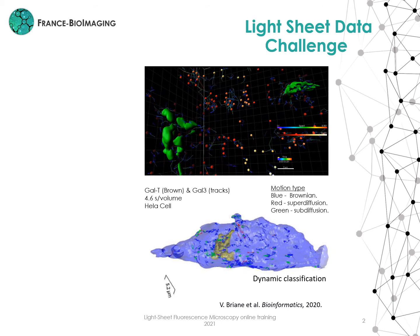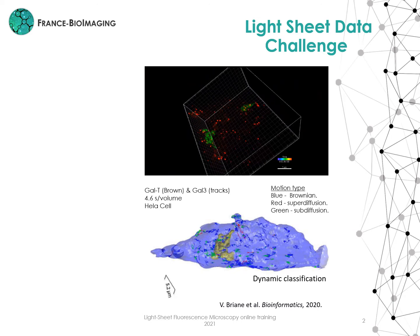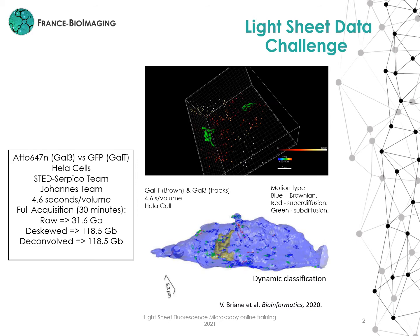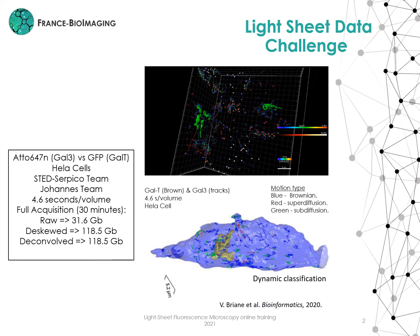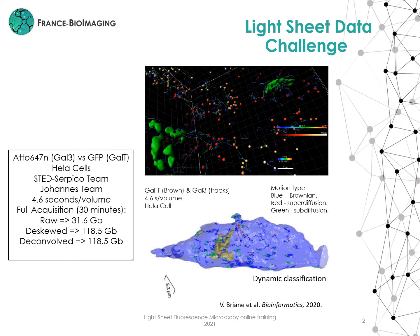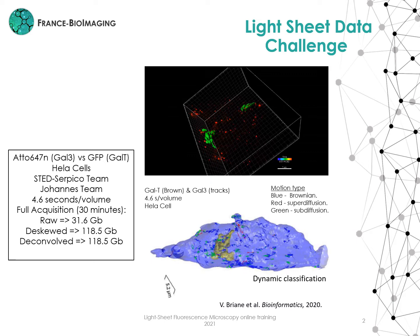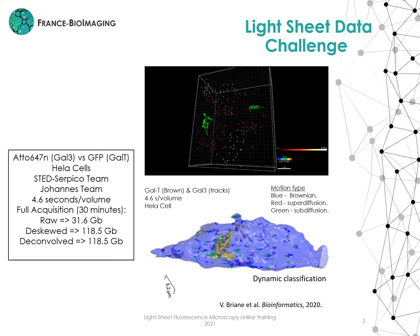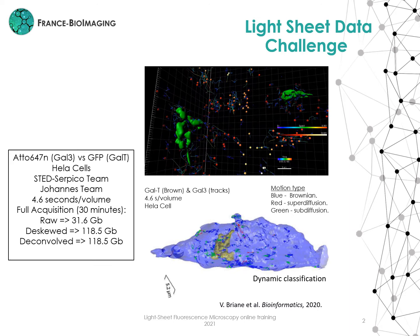Nevertheless, it is important to mention that the acquisition was 30 minutes long. It implies around 70 gigabytes of raw data for a given cell. Each volume was acquired every 5 seconds. The raw data was corrected and deskewed for visualization purposes. These steps include passing from 16 bits to 32 bits and increasing the number of pixels due to the deskew step, which will generate some extra gigabytes. This can be even more complex with other microscopes, as in the case of the SPIM where the acquisition can reach the terabyte.